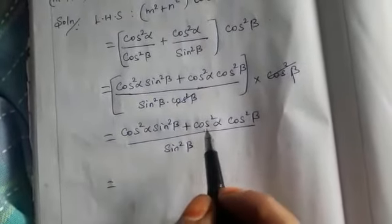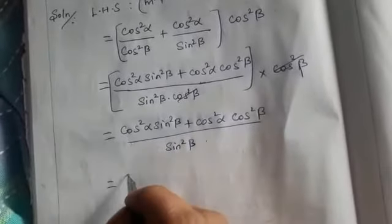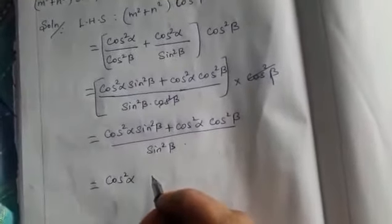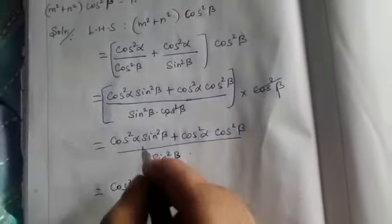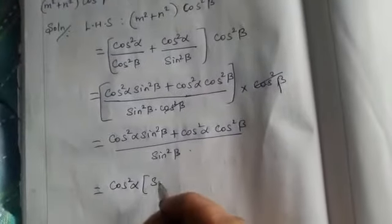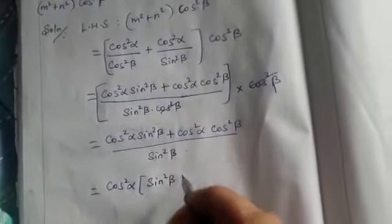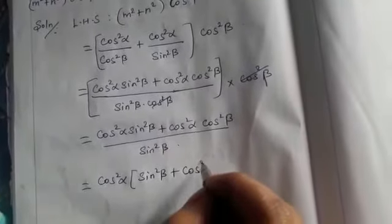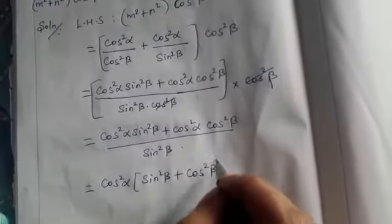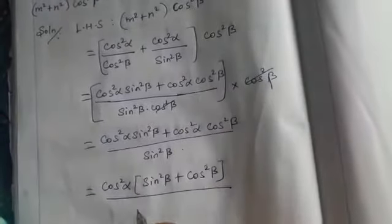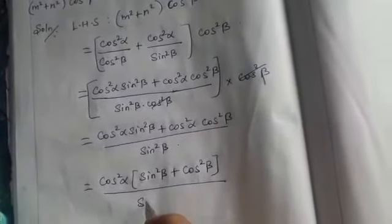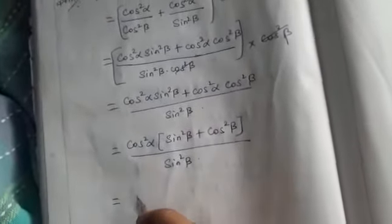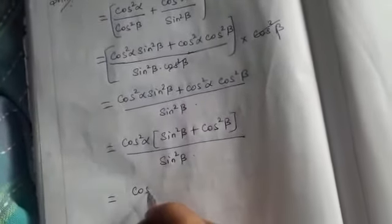In both terms, cos²α is common, so we can take it outside. Factoring out cos²α gives us cos²α · (sin²β + cos²β), all divided by sin²β.